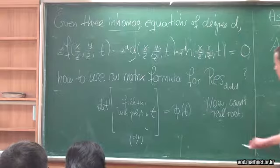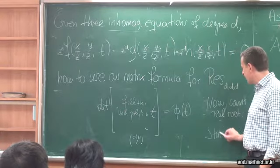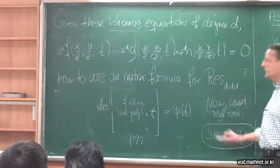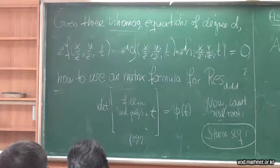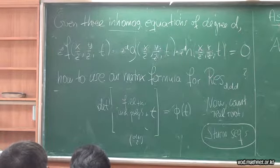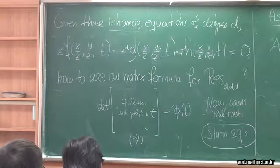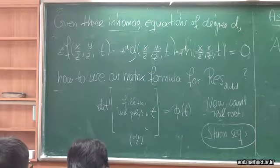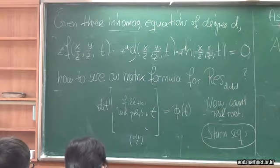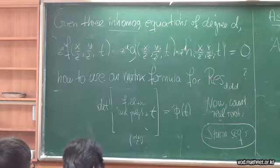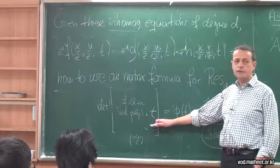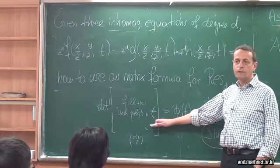So how do you count real roots? This is all built into fast symbolic software. For example, you can use Sturm sequences. So if d equals four — three quartic surfaces in three-space — then this will be an equation of degree 4³ = 64, and you can very rapidly count how many of the 64 roots are real. The key point is working with a matrix whose entries are polynomials in one variable is very, very fast.